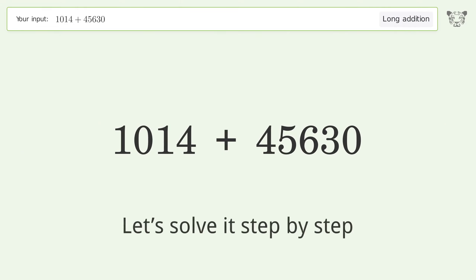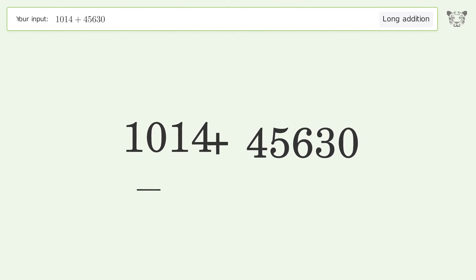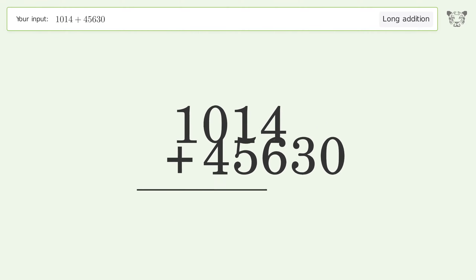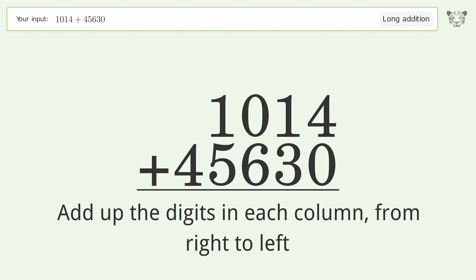Let's solve it step by step. Rewrite the numbers from top to bottom, aligned by their place values. Add up the digits in each column from right to left.